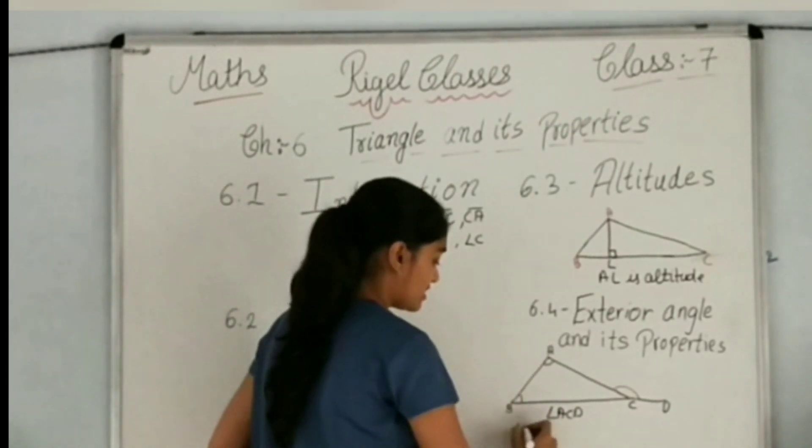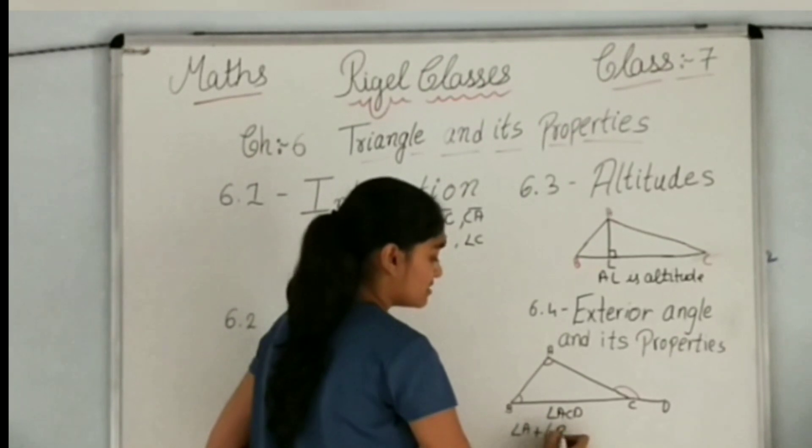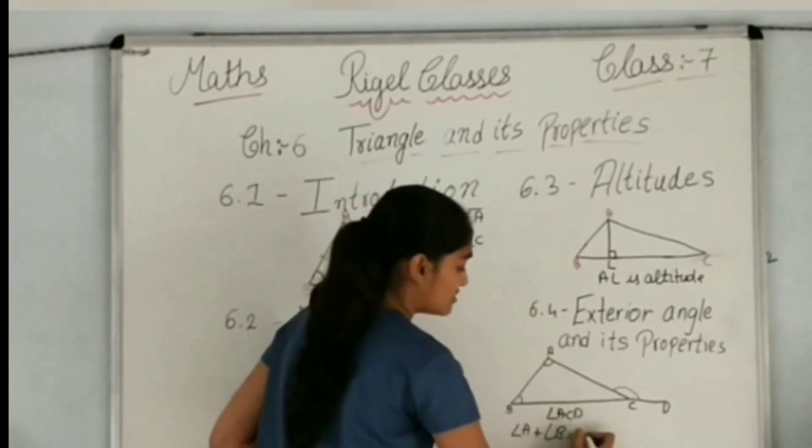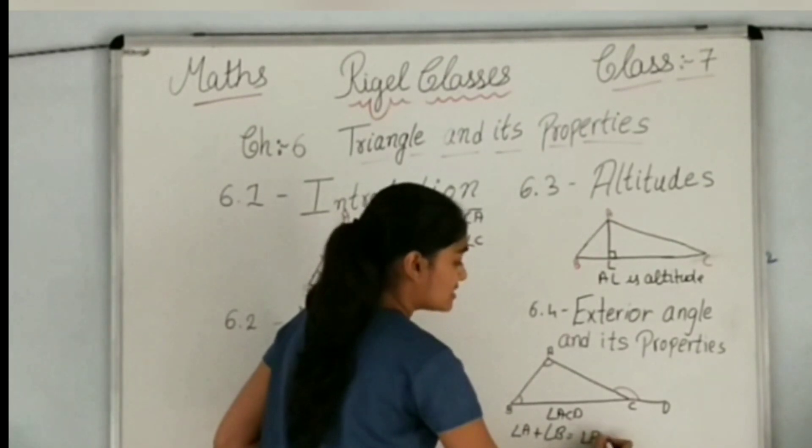The property for that is that the sum of two interior angles, that is angle A plus angle B, is equal to the exterior opposite angle, that is angle ACD.